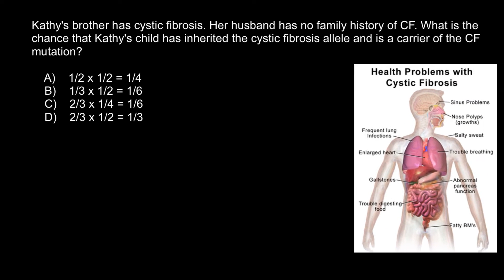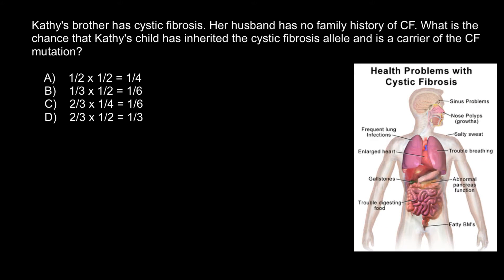Here is a picture that explains all the problems with different organs and systems in people who inherited two recessive alleles. Those who inherited only one mutated allele will have a normal phenotype, but those who inherited two recessive alleles — one from each parent — will express this genetic disorder. Cystic fibrosis is a syndrome, meaning there are many different problems with many different systems and organs.